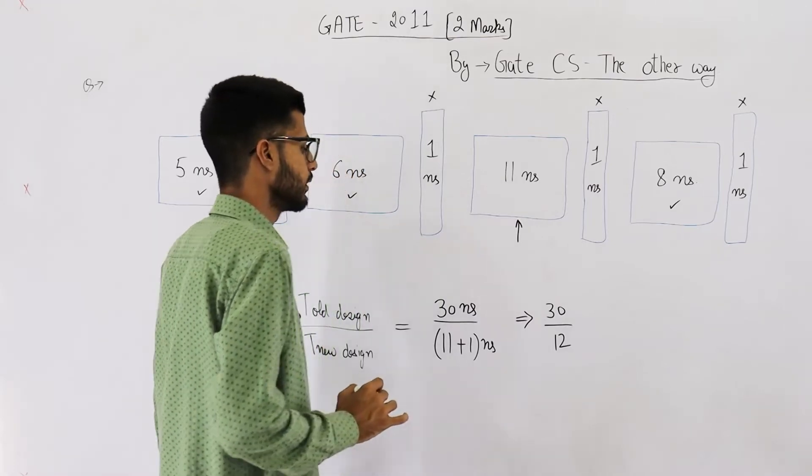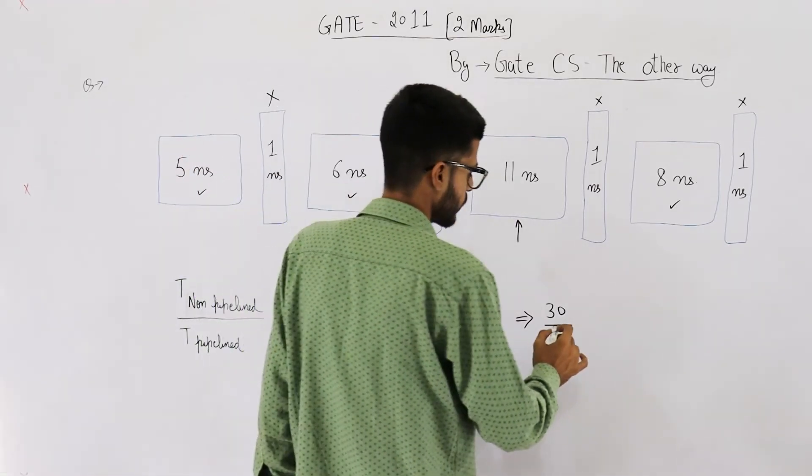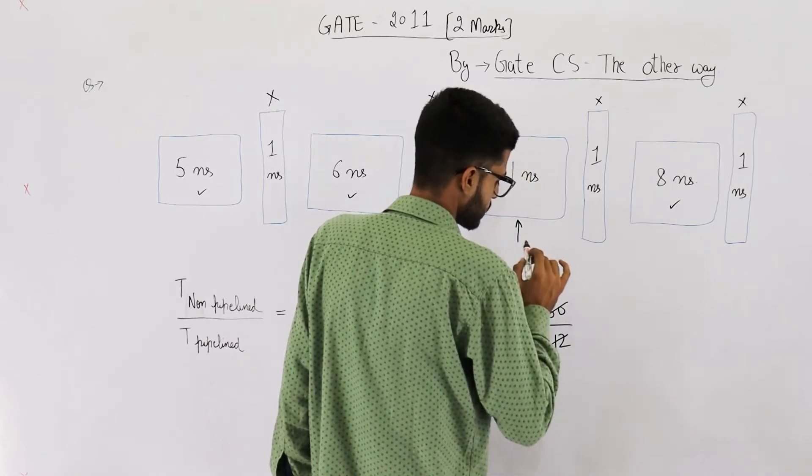And nanosecond nanosecond gets canceled. Let's calculate. What is this? 12 ones are 12, 2s are 24.